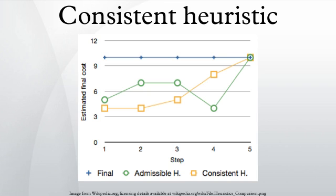Formally, for every node n and every successor p of n generated by any action a, the estimated cost of reaching the goal from n is no greater than the step cost of getting to p plus the estimated cost of reaching the goal from p. In other words, where h is the consistent heuristic function, n is any node in the graph, p is any descendant of n, g is any goal node, and c(n, p) is the cost of reaching node p from n.